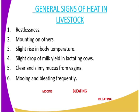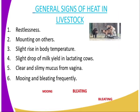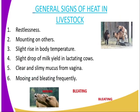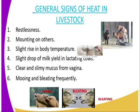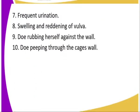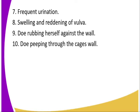Then we have clear and slimy mucus from the vagina — you normally see slimy, mucus-like fluid coming from the vagina. Then the sixth sign is mooing and bleating frequently. For example, mooing for a cow, and bleating in a goat. You can see the images of goats and sheep bleating. Then the seventh sign is frequent urination, commonly found in pigs and also in rabbits.